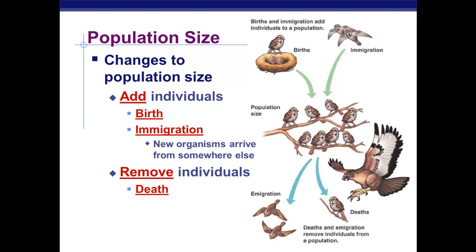Death can be through predators, disease, or not having enough food — many ways to die, but death is one of the only ways to remove individuals from a population. There's also the opposite of immigration, which is emigration with an E, when individuals leave an area. Immigration and emigration always go together — if I moved to Australia, I would be emigrating from the United States but immigrating from Australia's point of view.